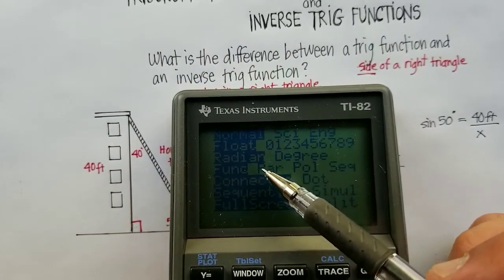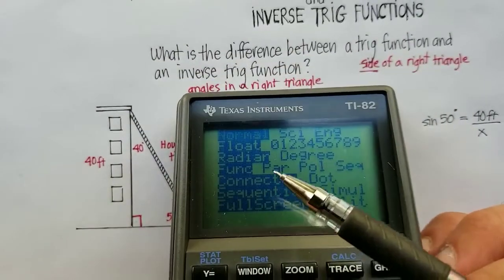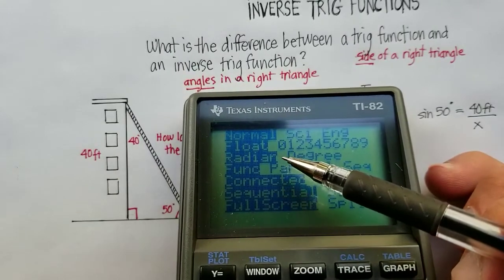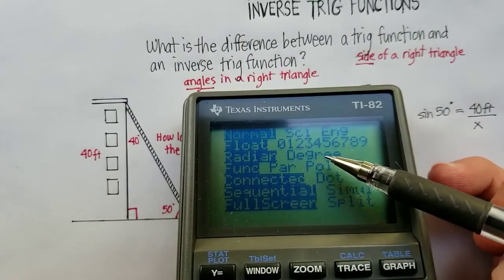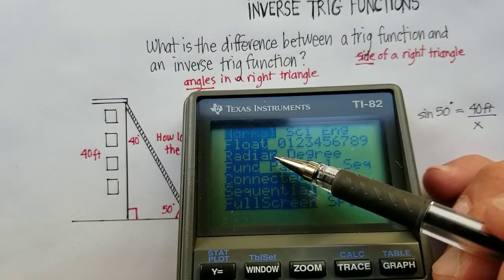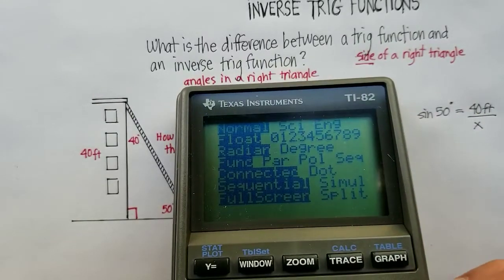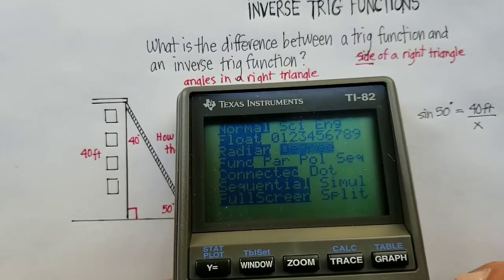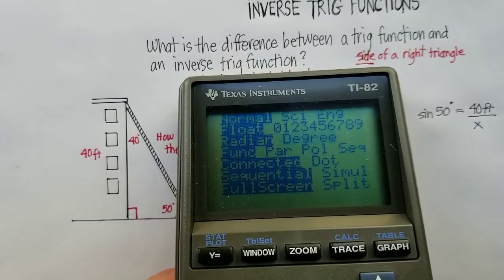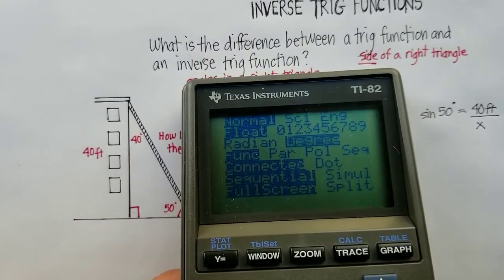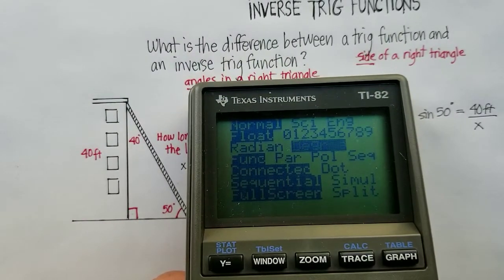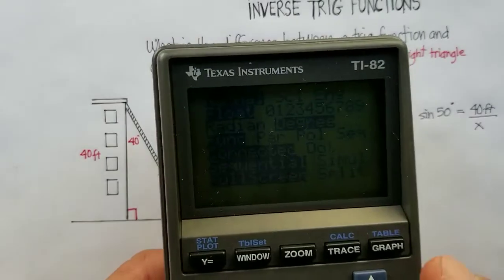We need to make sure that, make sure that your calculator is set on degrees and not radians. Okay, because it will give you an incorrect answer. So, let's go ahead and do that. Now it's on degrees. Enter. And let's go back and redo this.